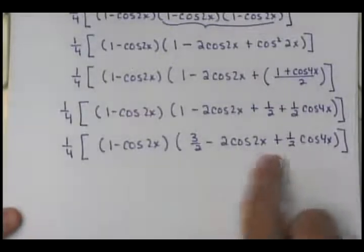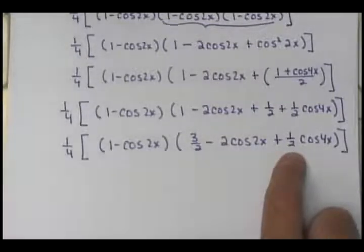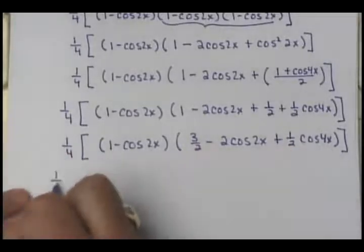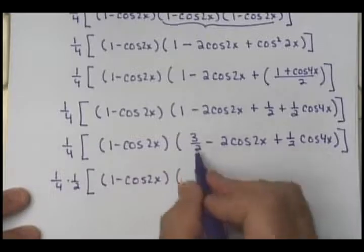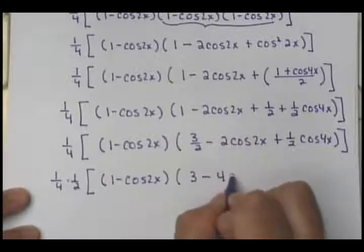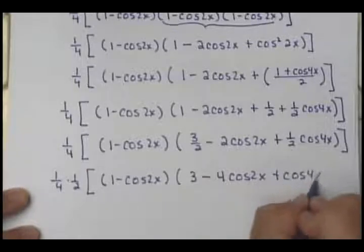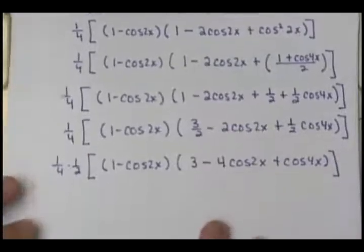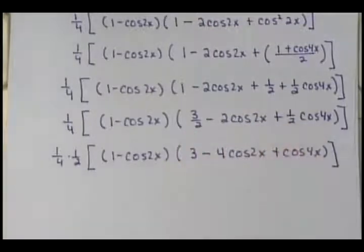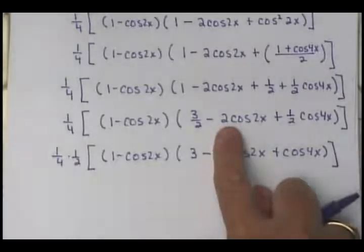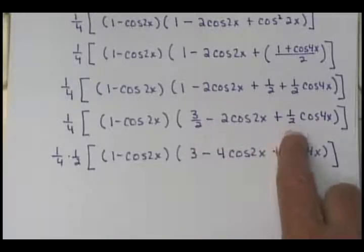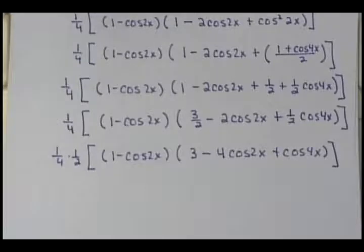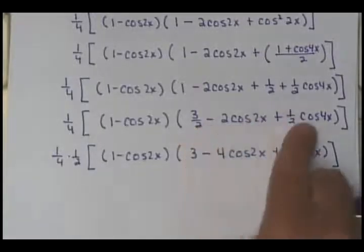At this point I want to get rid of the fraction, so I'm going to factor out 1 half. If I factor out 1 half from (1 minus cosine 2x) I get a factor, and factoring 1 half out of the other gives 3 minus 4 cosine 2x plus cosine 4x. Ask yourself: 1 half times what gives 2? Answer: 4. 1 half times what gives 3 halves? Answer: 3. So I've divided each term by 1 half, giving me 1 eighth overall.